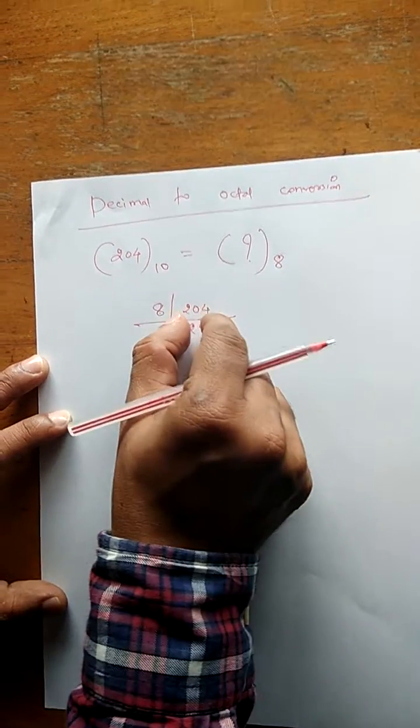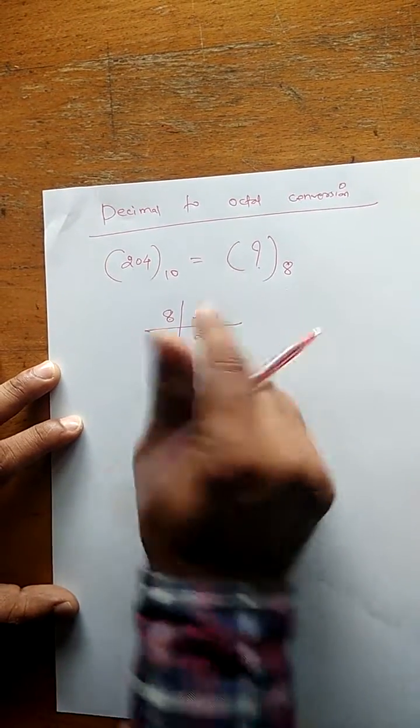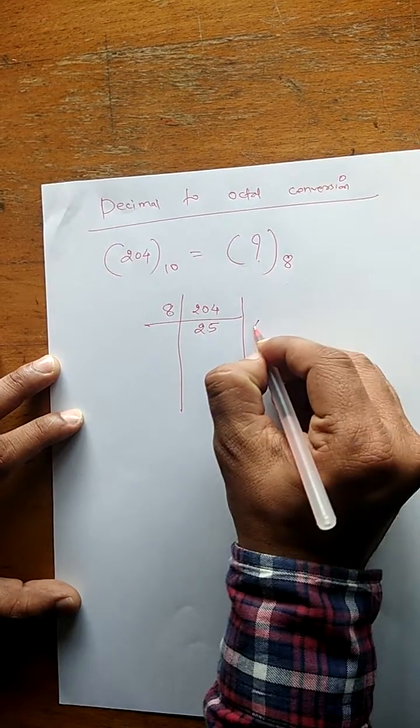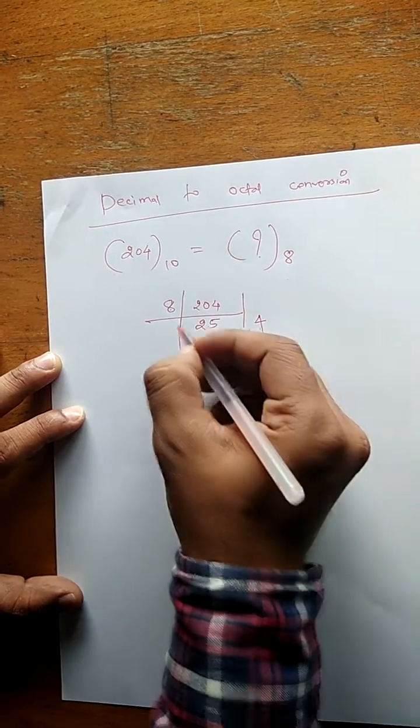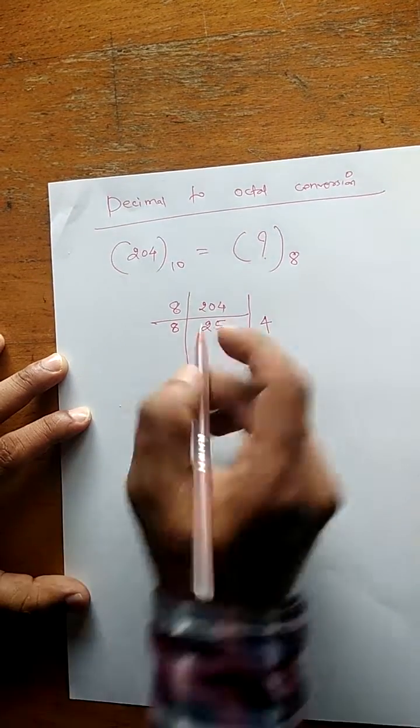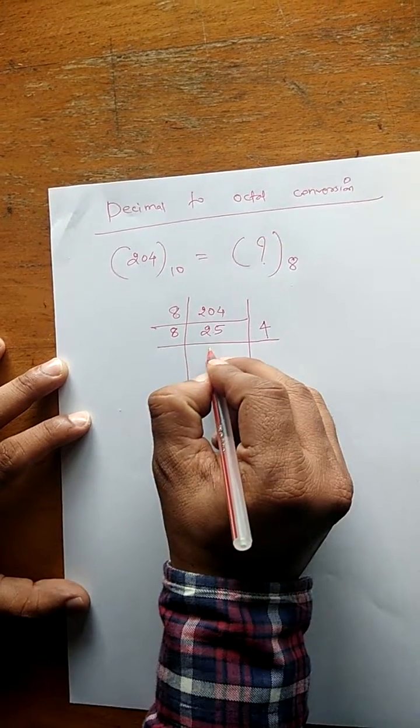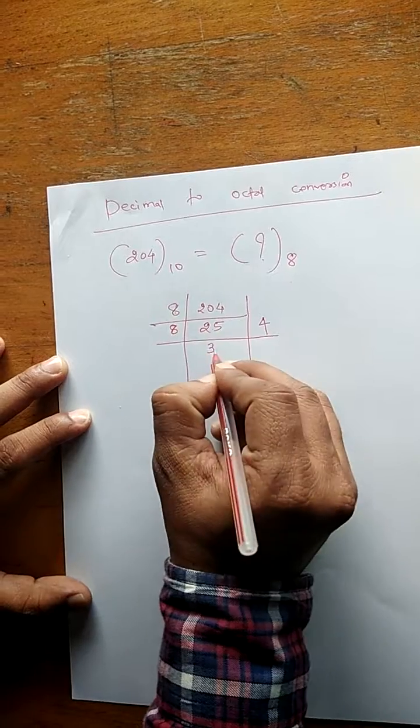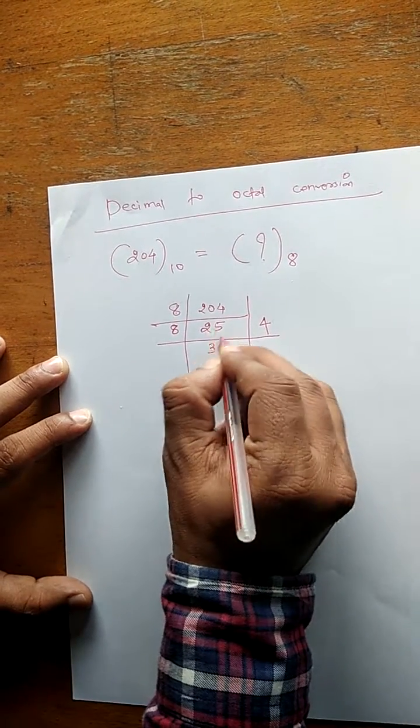Now in this case I will write 3, because 8 into 3 is 24, which is nearer to 25, and the remainder will be 1. At the end, this number is smaller than the given number base, which is 8.